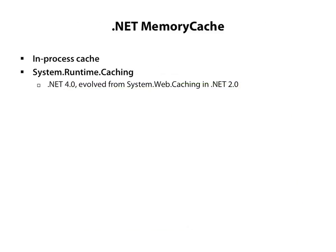So let's have a look at the first local cache store: the .NET memory cache. It's an in-process cache which is part of the .NET framework. Memory cache is in the System.Runtime.Caching assembly and is similar to the ASP.NET cache which lives in System.Web.Caching. It's been extracted so consumers can use it without referencing System.Web.